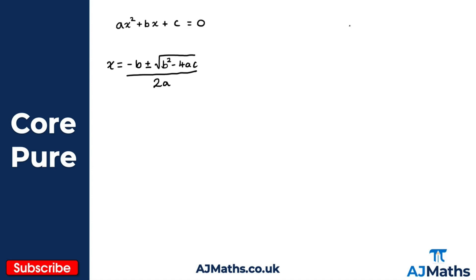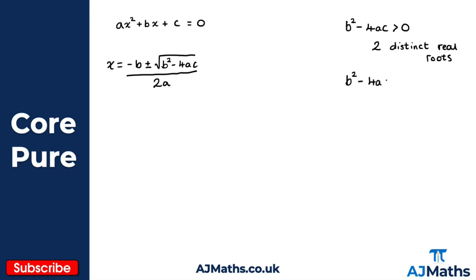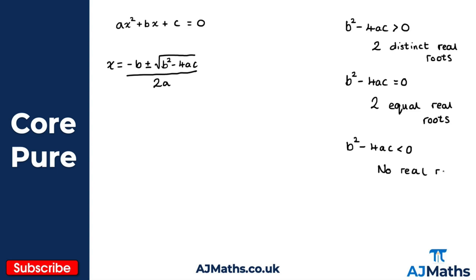You would have covered the discriminant at the beginning of A-level maths. We have three conditions: if b squared minus 4ac is greater than zero, there are two distinct real roots. If b squared minus 4ac is equal to zero, there are two equal real roots. And if b squared minus 4ac is less than zero, there are no real roots.